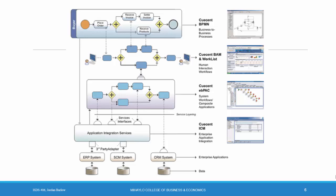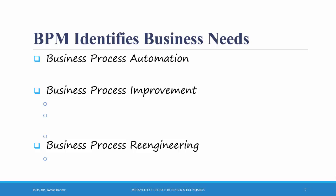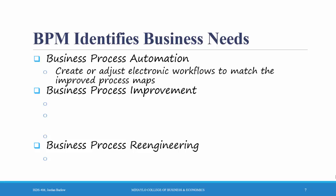Let's use the example of a customer ordering process to talk about three different kinds of business process management techniques. The first is business process automation. In business process automation, you create or adjust electronic workflows to match the improved process maps — after you've mapped out your process and decided on ways to improve it, you use electronic means and tools to automate the process. For example, if your organization used paper forms when customers wanted to order a new product and you change it so customers now use electronic means, you're doing business process automation.